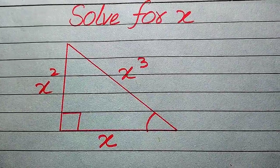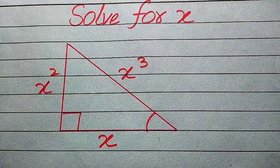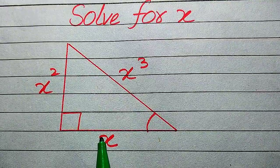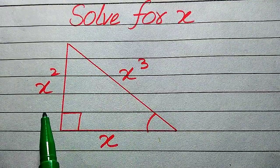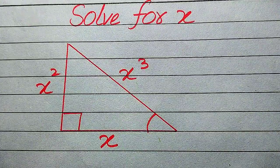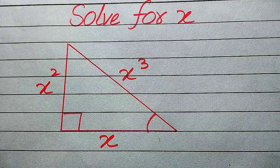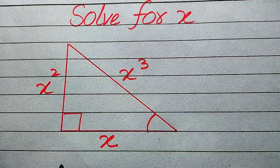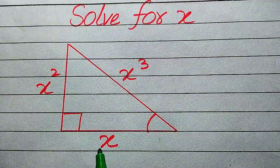Hello everyone. Let's solve this nice math olympiad geometry problem. We have a right triangle in which the lengths of the sides are x, x², and x³ respectively. We need to find the value of x, or in other words, we need to find the length of all of these sides.